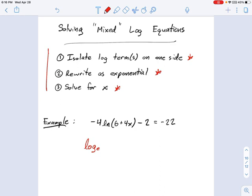So I'm just going to rewrite that as log base e, just to make it really clear what ln is. And we have -4 times log base e of (6 + 4x). And instead of minus 2, I'm just going to add 2 to each side. And this becomes -20.